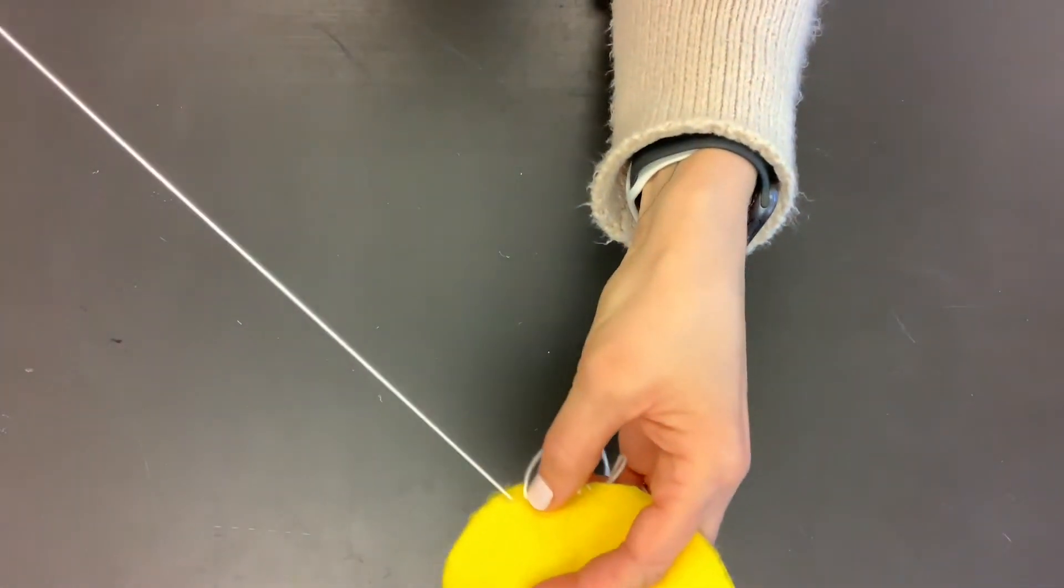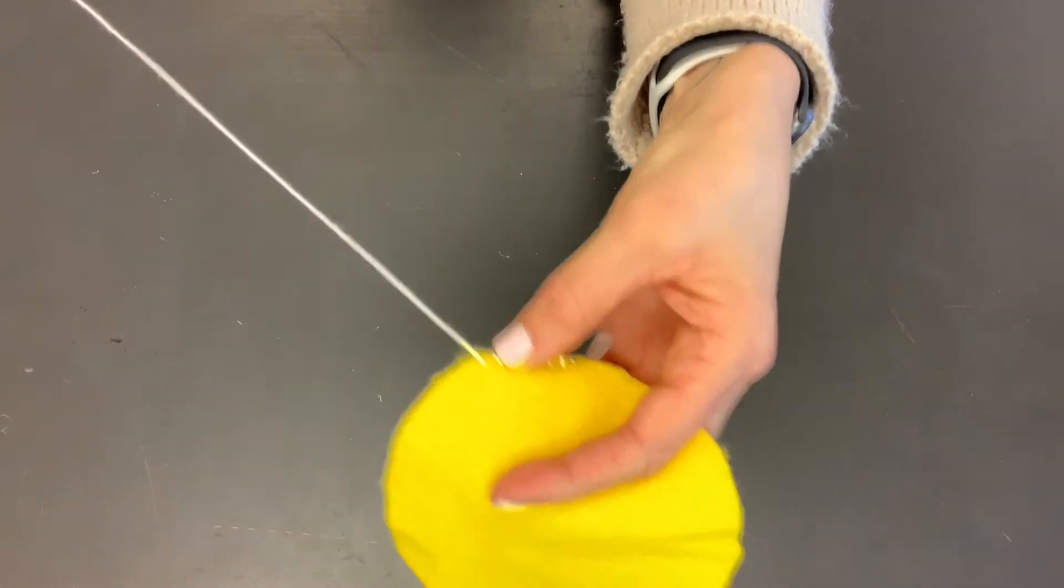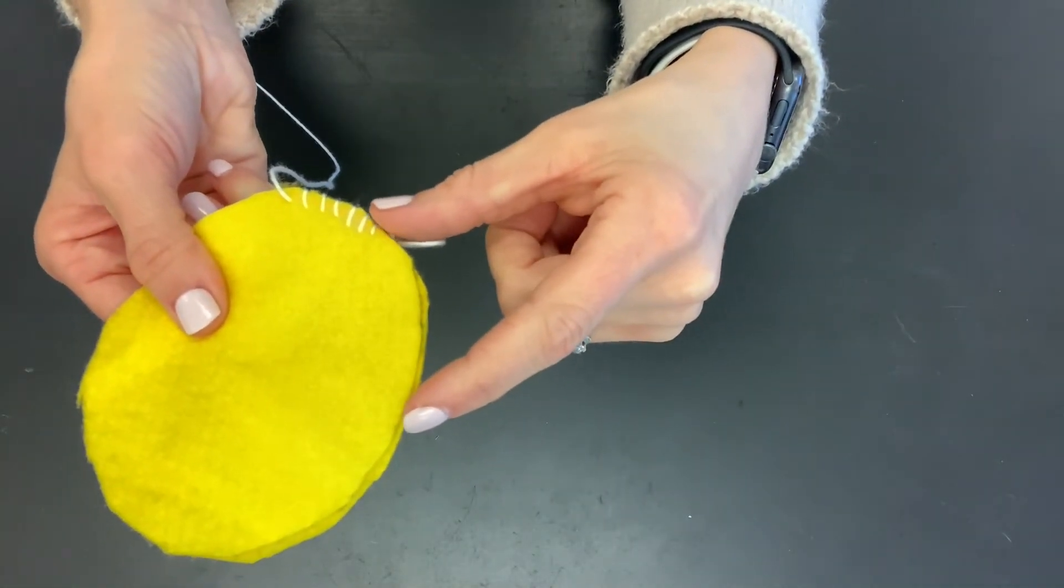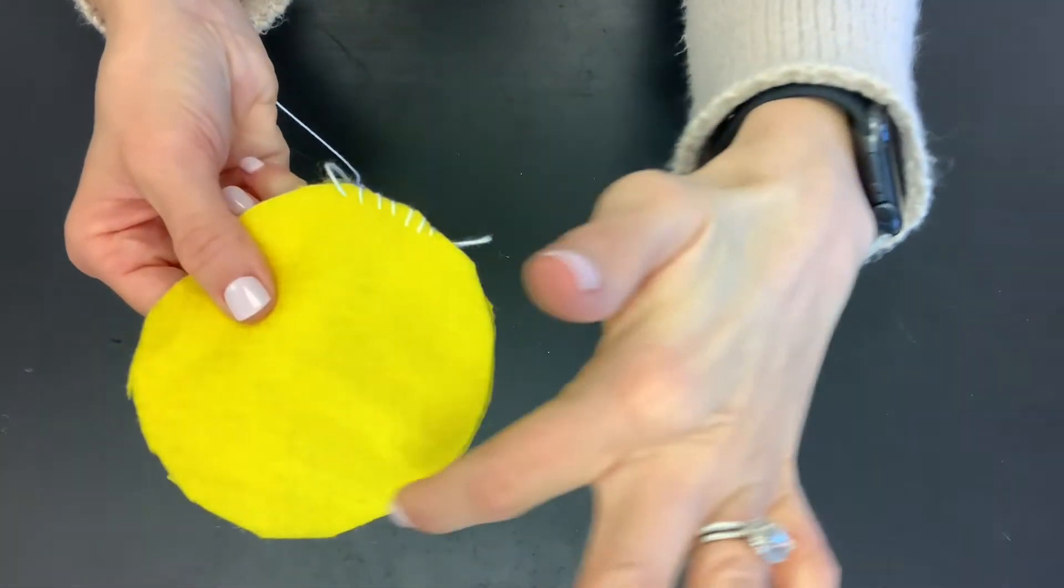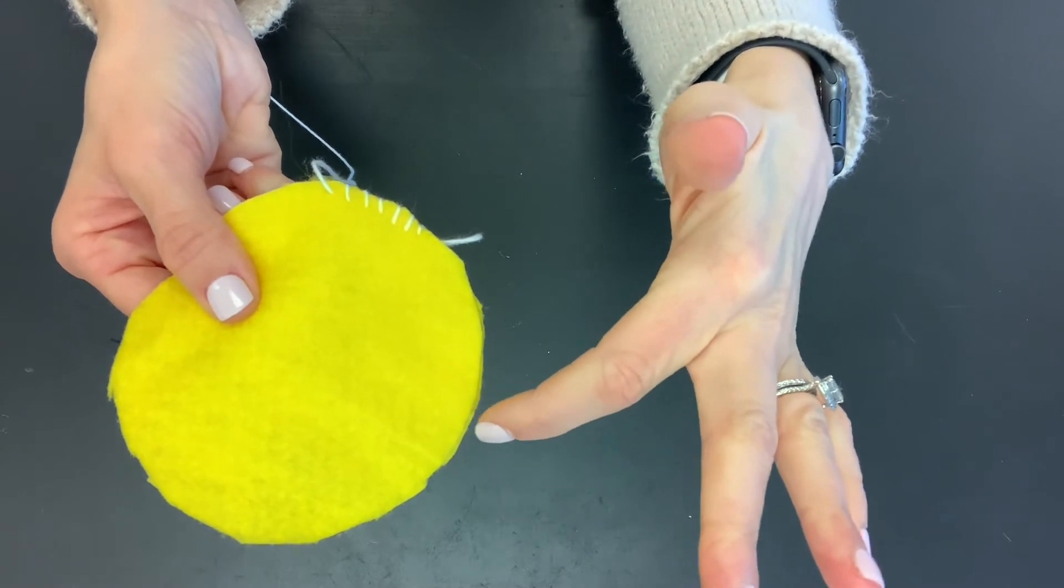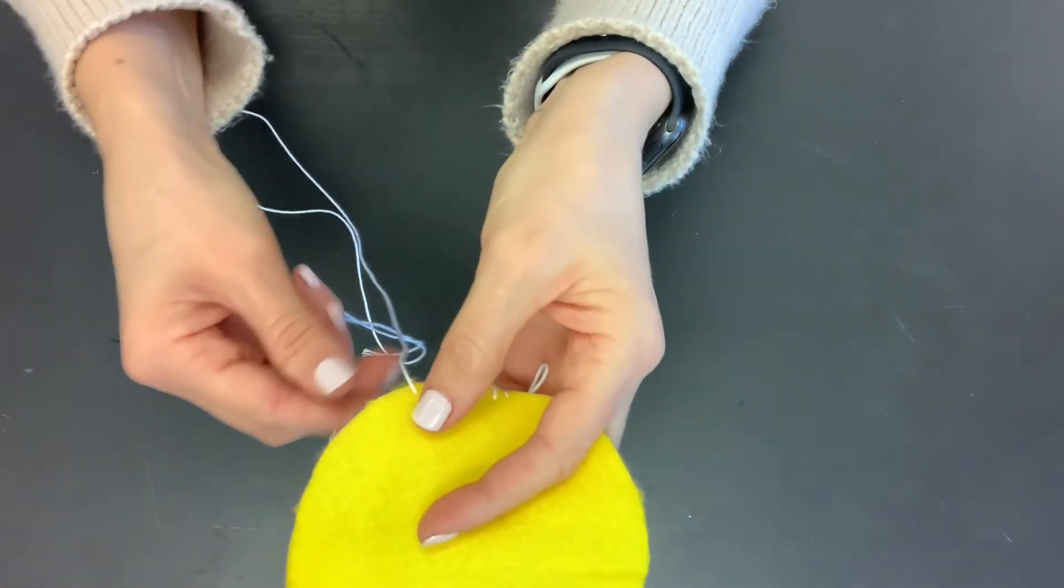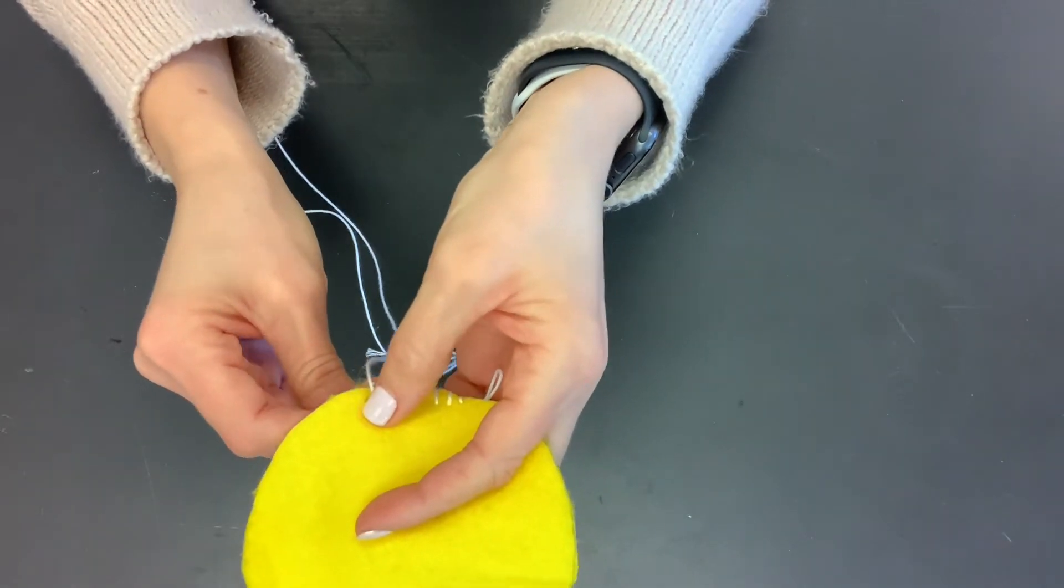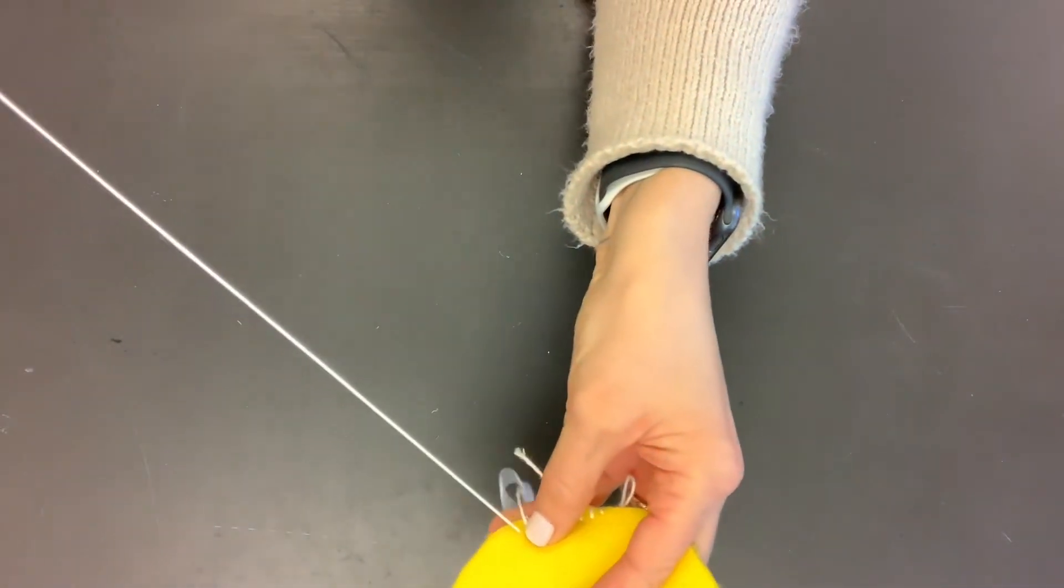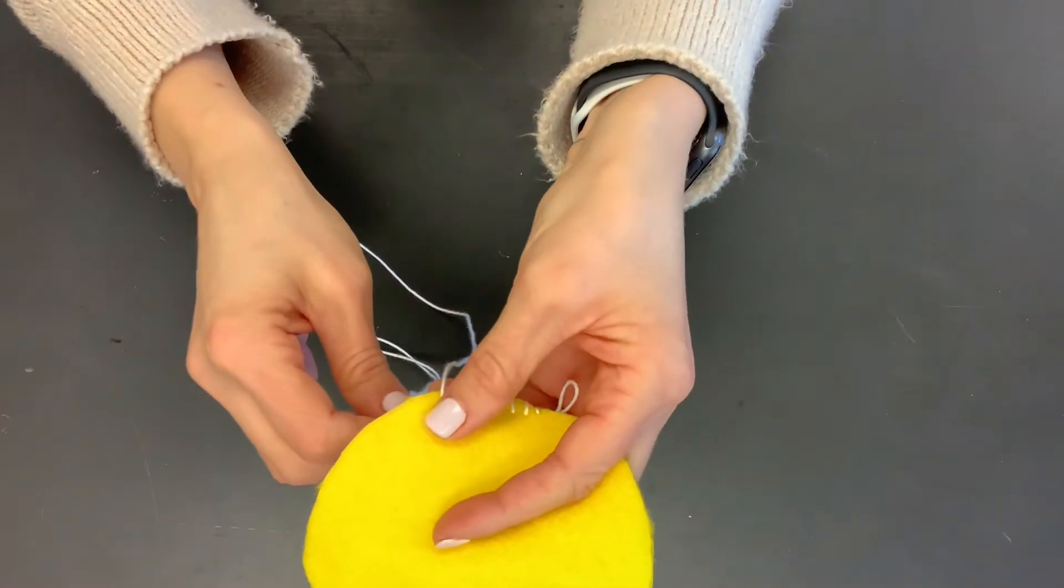I want to sew the whole way around my emoji head until I get about, leave about that much space. So I'm going to sew the whole way around, and then go to about here. And then we're going to put stuffing inside before we sew it up the rest of the way. So here I go. I'm going to keep sewing doing my whip stitch, always going up through the fabric.